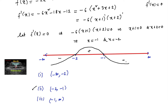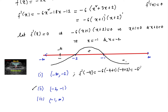Let us verify generally by taking a test value. In the interval (-∞, -2), let's take x = -4. Then f'(-4) = -6(-4 + 1)(-4 + 2) = -6(-3)(-2). Negative times negative times negative is negative, which means f'(x) is negative in the region (-∞, -2), confirming the function is decreasing there.